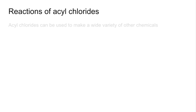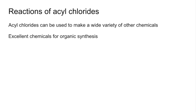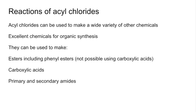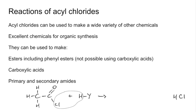Moving on to the reactions of acyl chlorides. They're very, very useful chemicals in organic synthesis because you can make lots of different things from them. They can be used to make esters, including phenyl esters — that's really important because you can't make phenyl esters from carboxylic acids. Carboxylic acids can also be made from acyl chlorides, and you can make primary and secondary amides. In general terms, we think about the acyl chloride reacting with HY, and we lasso out the HCl and stick the Y where the Cl was.